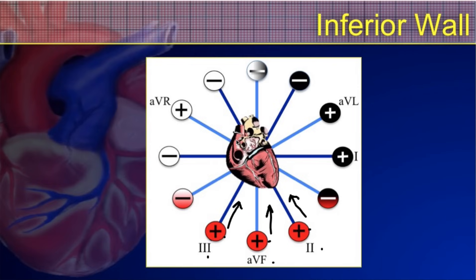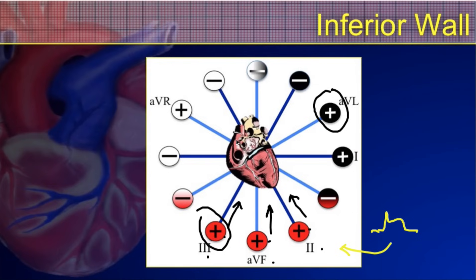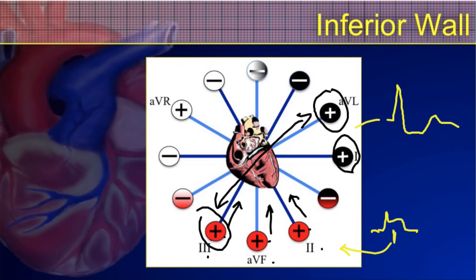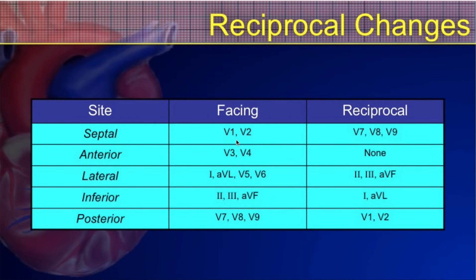If we have ST segment elevation in the inferior leads — 2, 3, and AVF — what would the reciprocal leads be? The reciprocal leads are those with positive electrodes on the opposite side of the heart. The most reciprocal leads are AVL and lead 3, as they are farthest apart in their angles of view. In AVL and lead 1 we might see ST depression — the reciprocal change. So whenever you have ST elevation in leads facing an injury, you may see ST segment depression in the opposite, reciprocal leads.